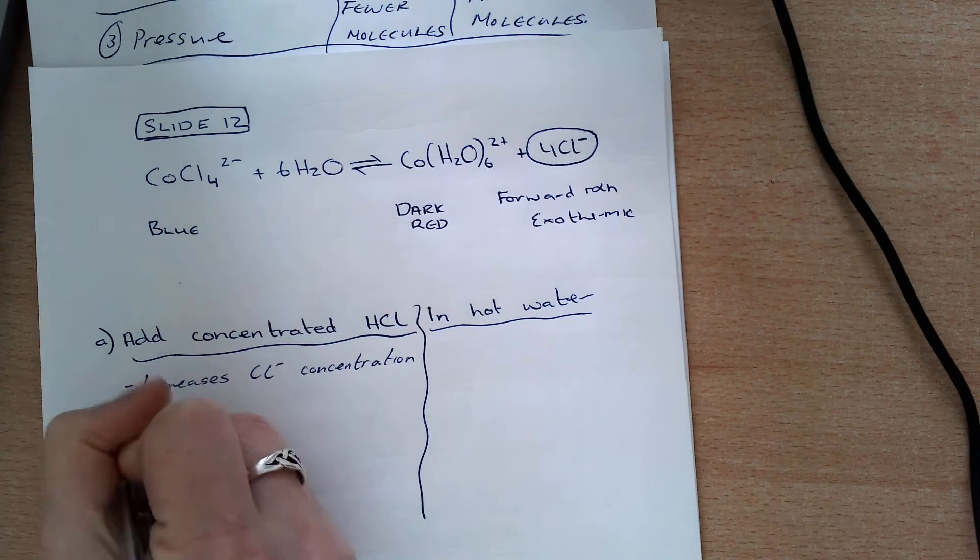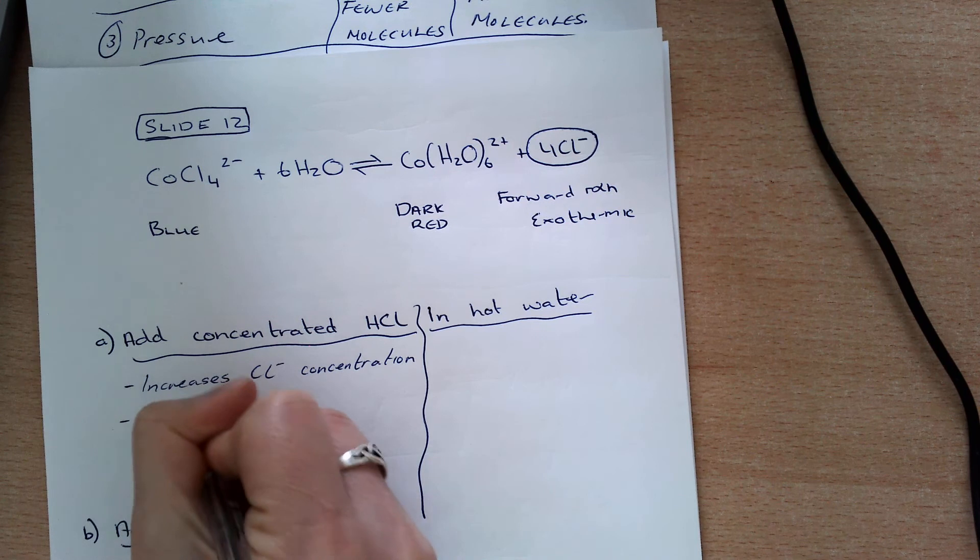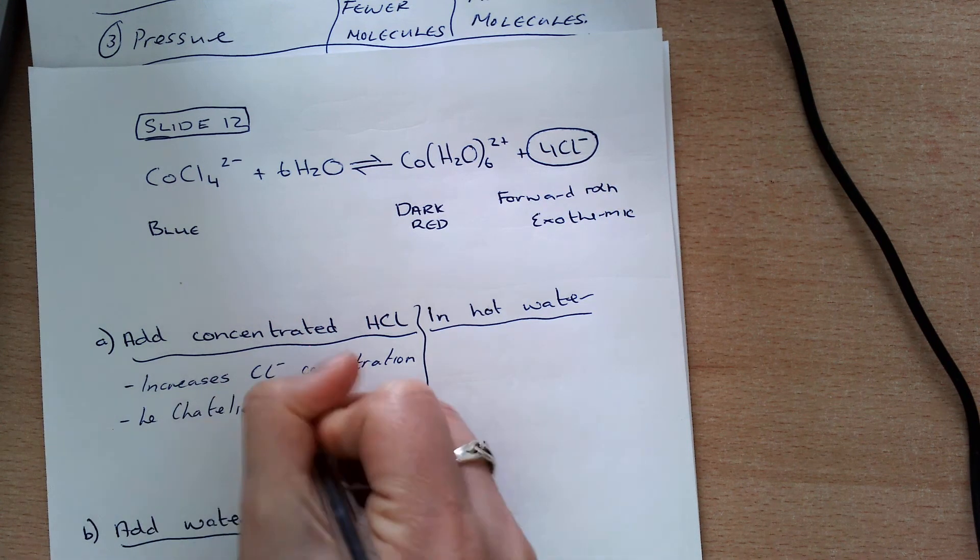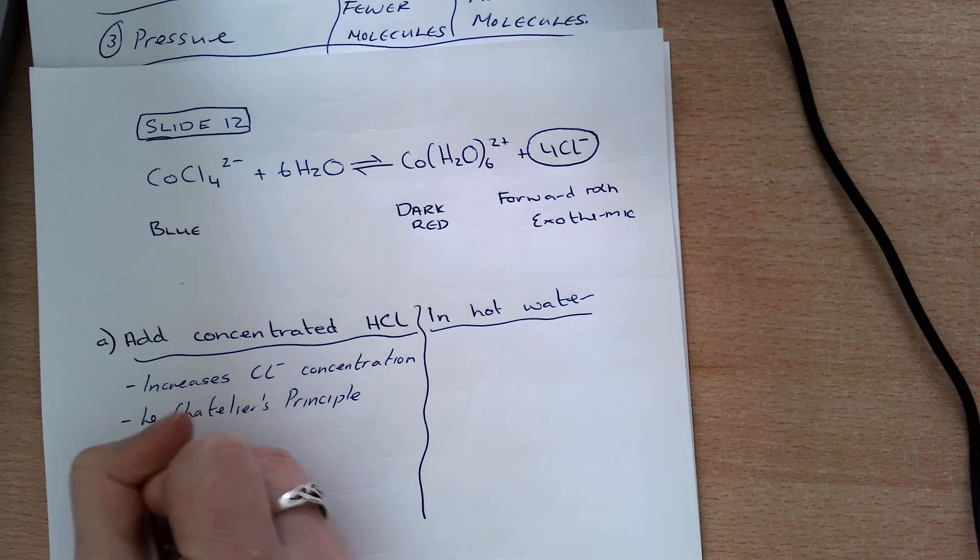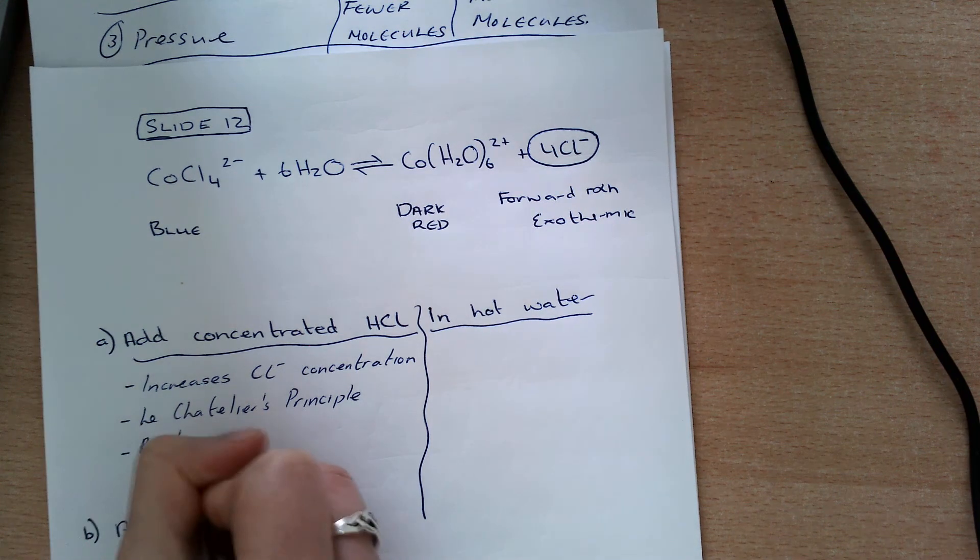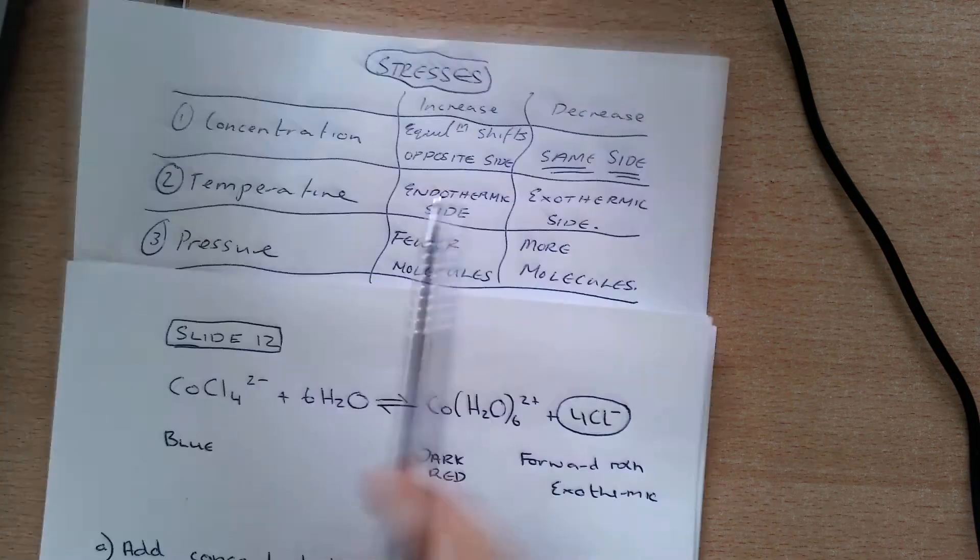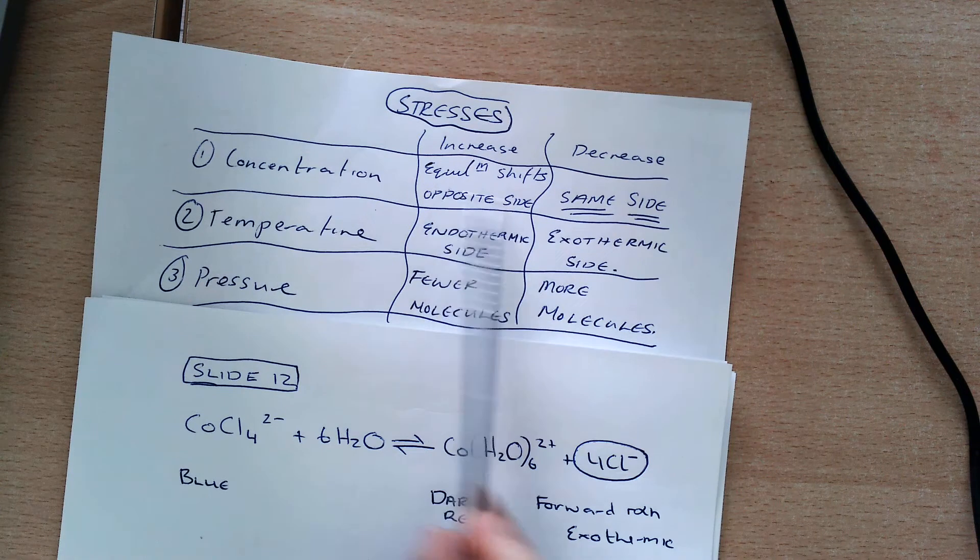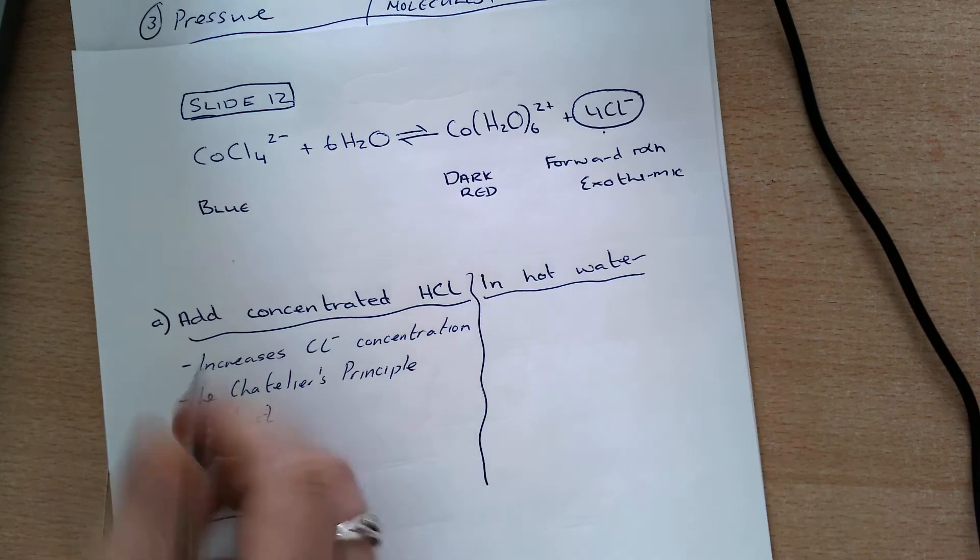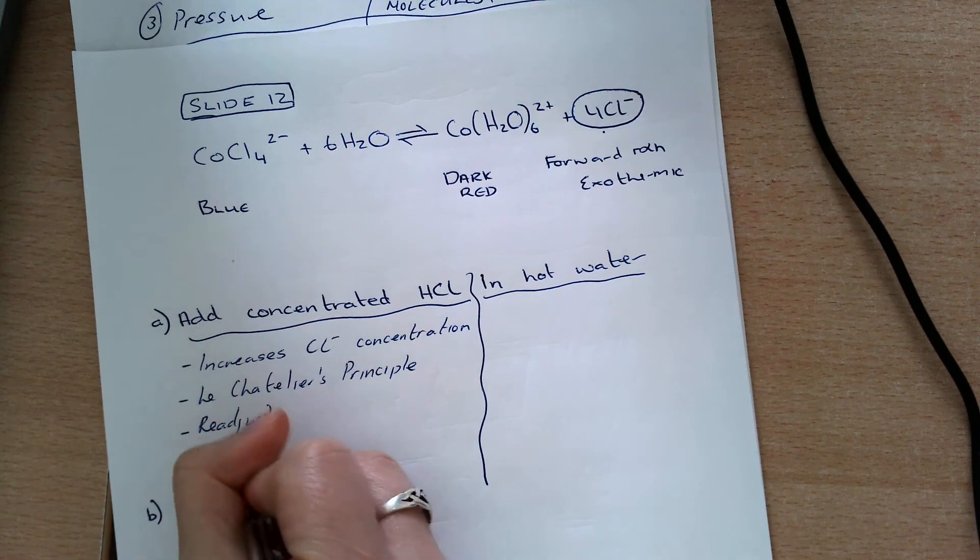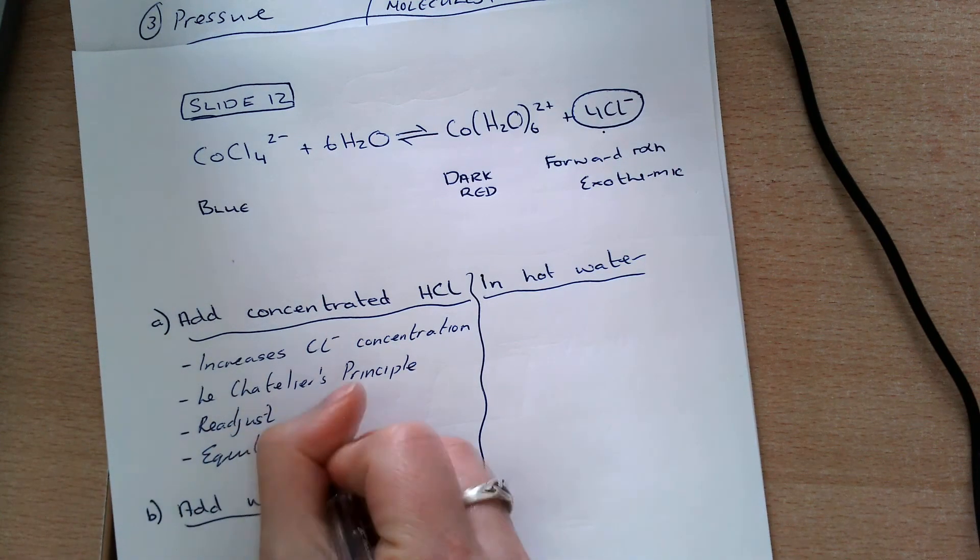Okay, again, according to Le Chatelier's principle, and I probably won't write this for all of them, but my system is going to readjust. And if I go to my rule for concentration: if I increase on one side, the equilibrium shifts to the opposite side. I'm increasing my concentration on the right-hand side, so that means equilibrium shifts left.